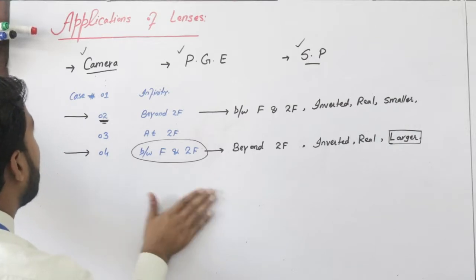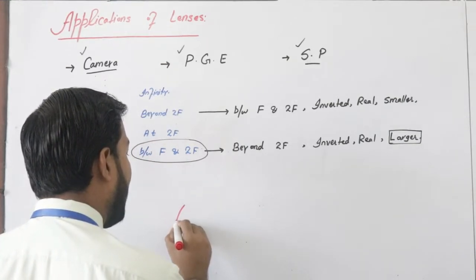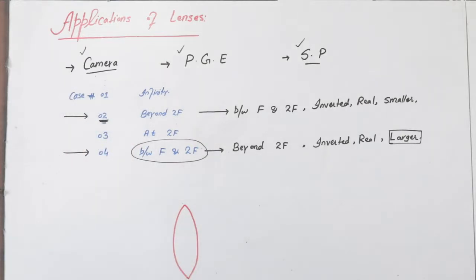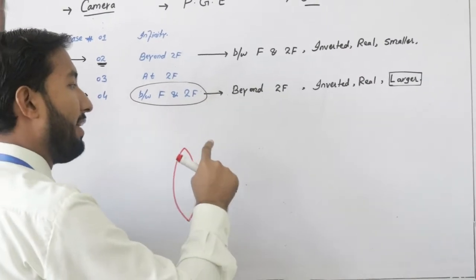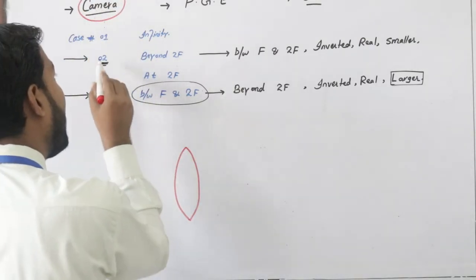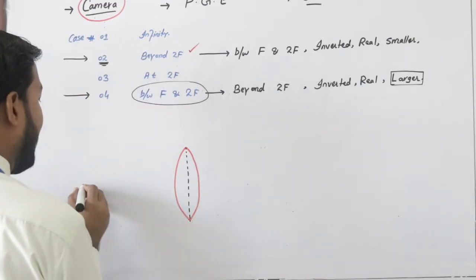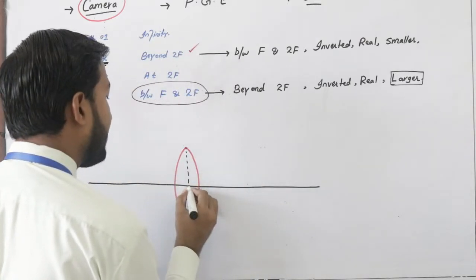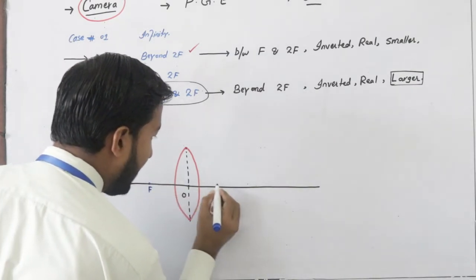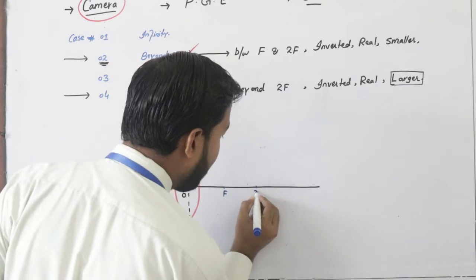اب ہم camera والے topic کی طرف آ رہے ہیں۔ Camera کو سمجھنے کے لیے پہلے ray diagrams بنا لینے ہیں۔ ہر topic میں سب سے پہلا کام ray diagram اچھی طرح بنانا ہے۔ Camera میں case number 2 استعمال ہوگا۔ فرض کریں یہ lens ہے، یہ aperture ہے، یہ principal axis ہے، یہ optical center ہے، اور یہ point F ہے۔